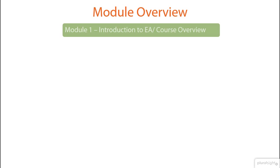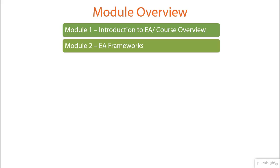Module 1 is the current module which introduced the basic concepts of enterprise architecture and offered a working definition of EA and this overview of the course itself. The next module, which is the second module, provides an overview of enterprise architecture frameworks. It covers some of the popular frameworks in the market that are related to enterprise architecture, and the module then offers guidance on their use in various scenarios.